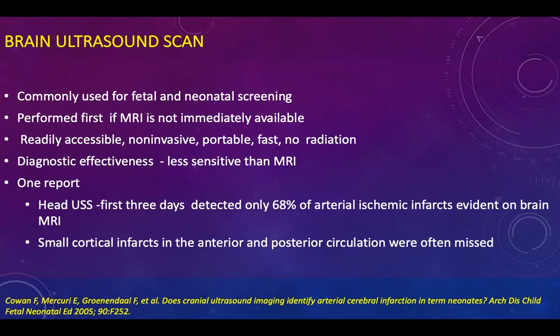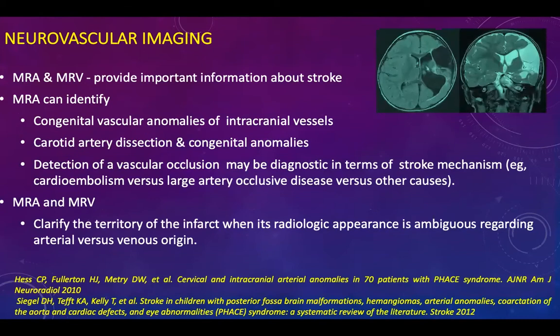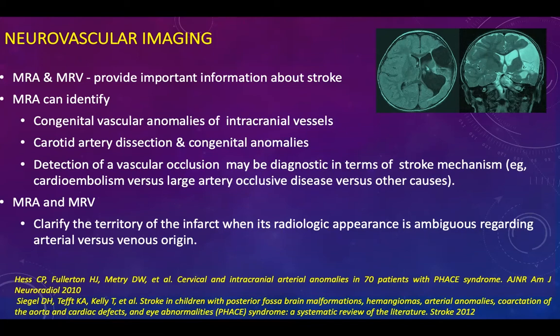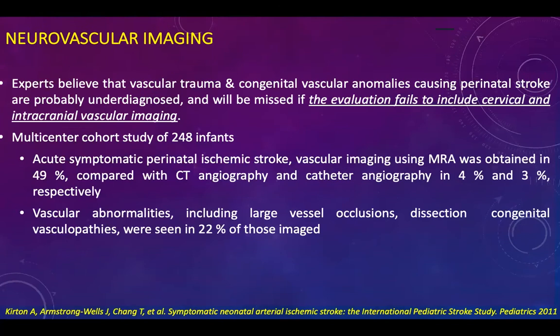One large report revealed that head ultrasound in the first three days detected only 68% of infarcts that were evident on brain MRI, so brain ultrasound can miss a lot. MRA and MRV provide important information about stroke: they clarify the territory of the infarct when its radiological appearance is ambiguous regarding arterial versus venous origin. MRA can also identify congenital vascular anomalies, carotid artery dissection, and other congenital anomalies.